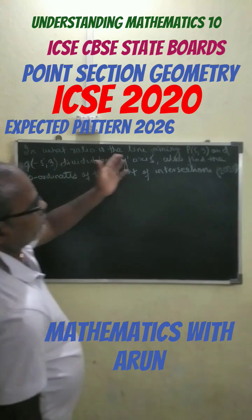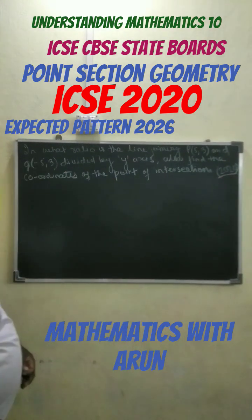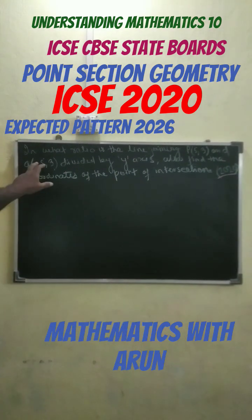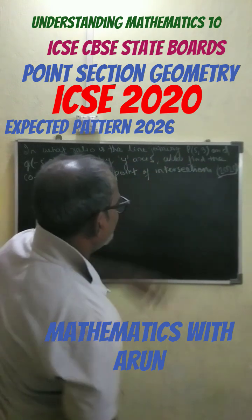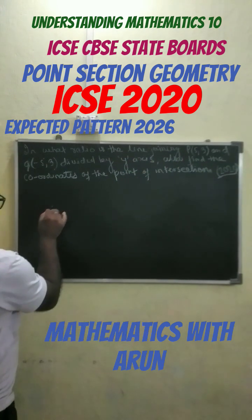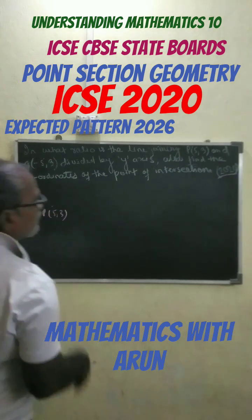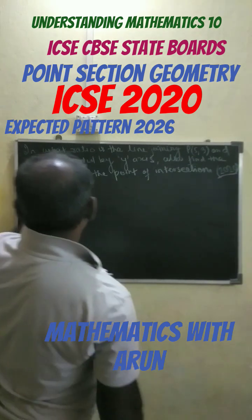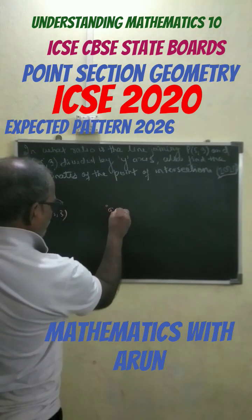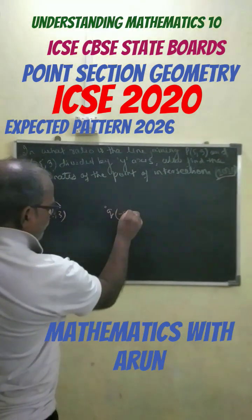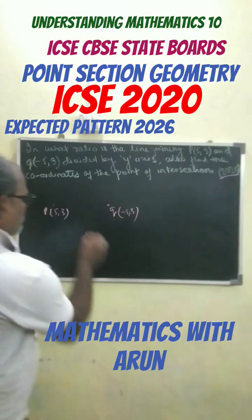There is one other question from ICAC which already appeared in 2020. Here we have to find out in what ratio the line joining P(5, 3) and Q(-5, 3) is divided by the y-axis.